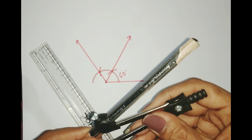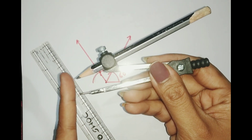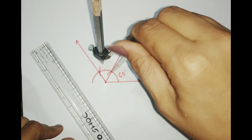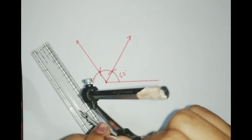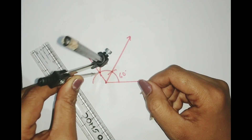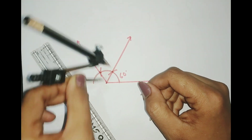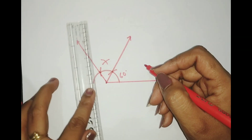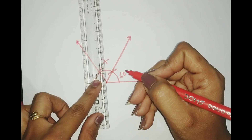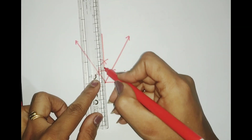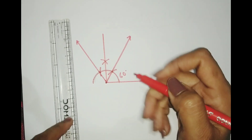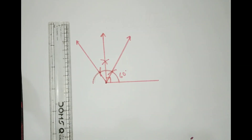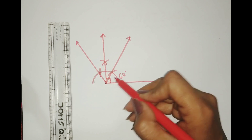Now let's draw 90 degrees. For that, you have to keep the compass as it is. Keep the compass right here and draw another arc, then keeping the compass at the next point draw another arc from that position. Then keep your scale here, passing through the center, and draw a straight line. Do you know that this also gives us 90 degrees? So we've now made 90°, 60°, and 120°.